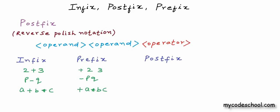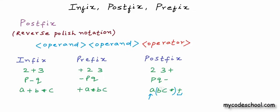Let me write postfix for the expressions I wrote earlier. The first expression 2 plus 3 in postfix is 2 3 plus. To separate operands, we can use a space or some other delimiter like a comma — that's how you would typically store prefix or postfix in a string when writing a program. The second expression in postfix is p q minus. The third expression in postfix is a b c asterisk plus. For the multiplication operator, operands are b and c; for addition, operands are a and the postfix expression b c asterisk.